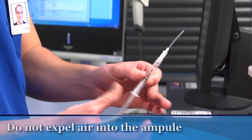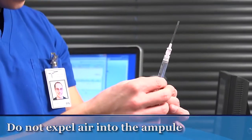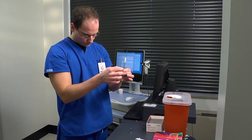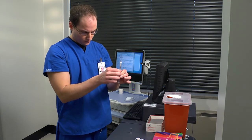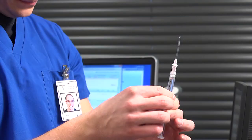To expel any air bubbles, remove the needle from the ampoule. Holding the syringe vertically, needle up, tap the side of the syringe to force the bubbles to rise. Draw back slightly on the plunger, and then push it upward to eject the air without ejecting any of the medication.